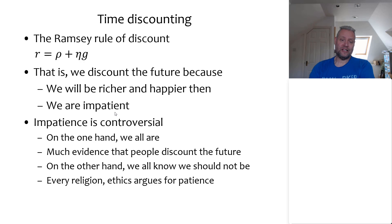Now what do we do with this impatience, what do we do with the ρ? And there is a long and controversial debate about this. And when I mean long debates, this debate has been going on since at least the time of the ancient Greeks. So this has been going on for 3000 years or so. And why is impatience so controversial?